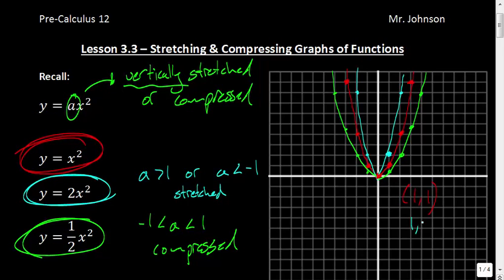And our green function was at (1, ½). That is all according to whatever a value you have. So our points have just been stretched or compressed, but only the y-values have changed.